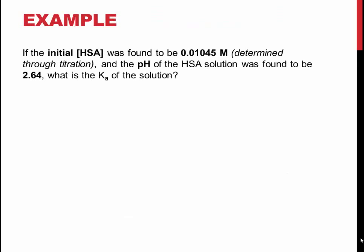Here is an example of how to calculate an equilibrium constant from pH values. The pH is measured 2.64.